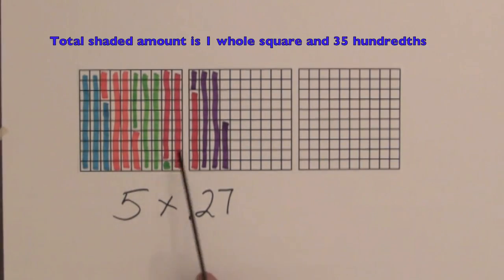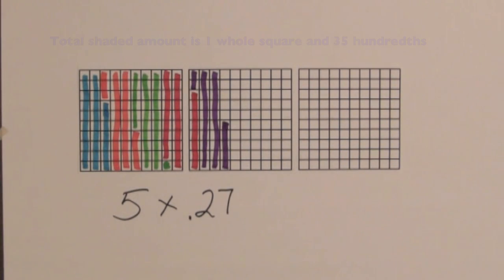The total shaded amount is one whole square and 10, 20, 30, 35 hundredths. So 5 times 27 hundredths equals 1 and 35 hundredths.